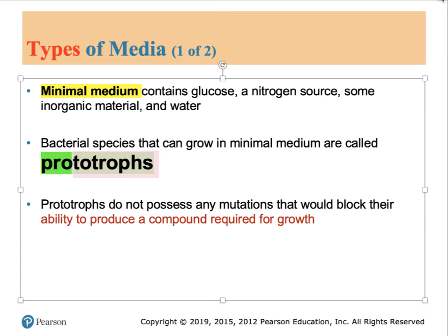Bacteria come in various types. Some can grow on simple media and make everything they need using those simple molecules. Others need to be supplied with special chemicals that they can't manufacture themselves. If a bacterium contains all the genes normally present in the wild type, that organism is said to be prototrophic. Prototrophs can grow on minimum media, which only needs to contain glucose, a nitrogen source, some inorganic material, and water.